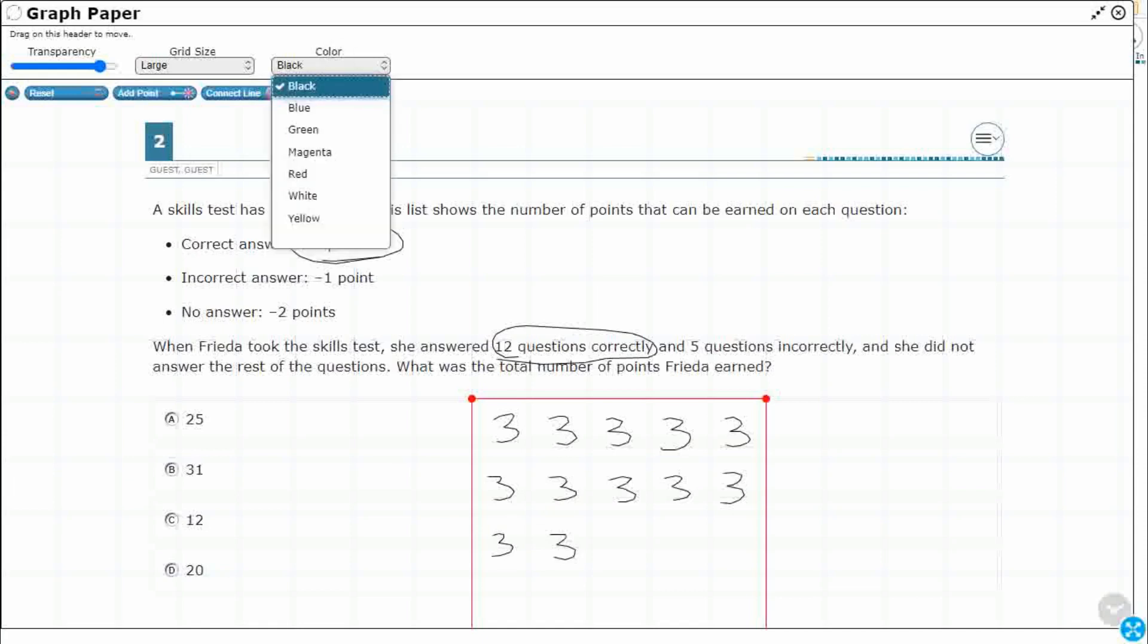Now I'm going to get into the red because I've got 5 questions that are incorrect. Incorrect is worth negative 1 point. So I'm going to do a negative 1, negative 1, negative 1, negative 1, negative 1.